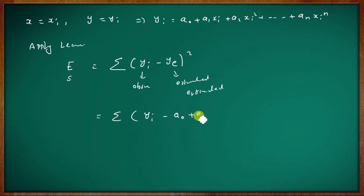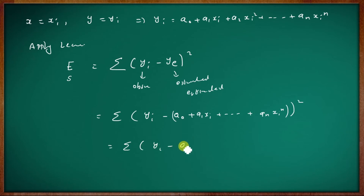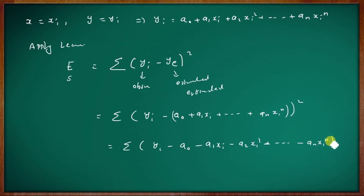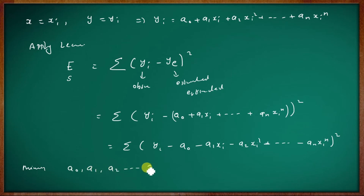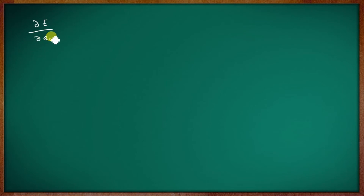The error expression becomes: E equal to summation of yi minus a0 minus a1 xi minus a2 xi squared, and so on, all squared. We want to minimize E with respect to the parameters a0, a1, a2, etc. To minimize, we partial differentiate with respect to each parameter. The first condition is: partial of E with respect to a0 equals 0. Similarly, partial of E with respect to a1 equals 0, and partial of E with respect to a2 equals 0.